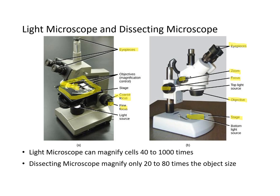The light microscope can magnify cells anywhere from 40 to 1,000 times, whereas the dissecting microscope can only magnify 20 to 80 times the object size.